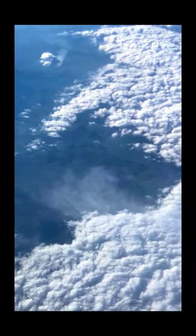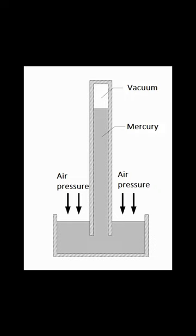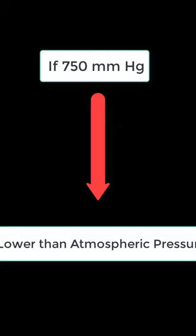At sea level, the standard atmospheric pressure is approximately 760 mmHg, or one atmosphere (atm). Therefore, measuring pressure in mmHg allows for easy comparison to atmospheric pressure. For example, if the pressure of a gas is 750 mmHg, we know that it is slightly lower than atmospheric pressure at sea level.